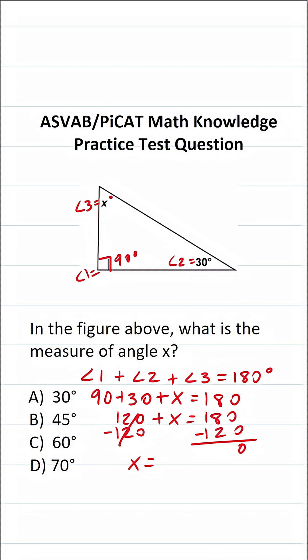0 minus 0 is 0. 8 minus 2 is 6. 1 minus 1 is nothing. So we can see that the measure of angle x is, in fact, 60 degrees.